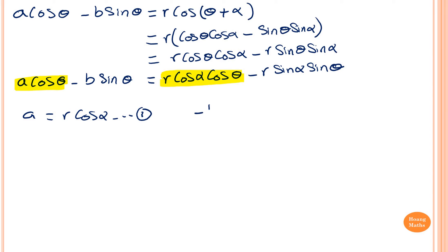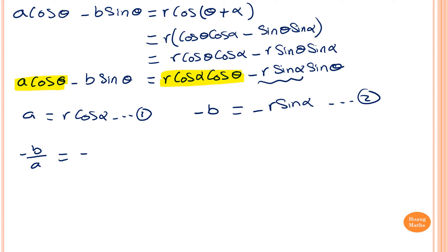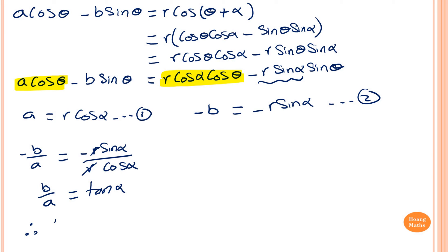So I divide equation two by equation one: −B over A = −r·sinα over r·cosα. The negatives on both sides cancel, and R cancels out, giving tanα. So therefore alpha = tan⁻¹(B/A).